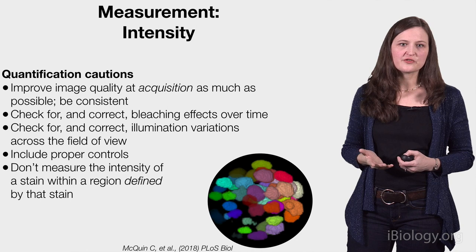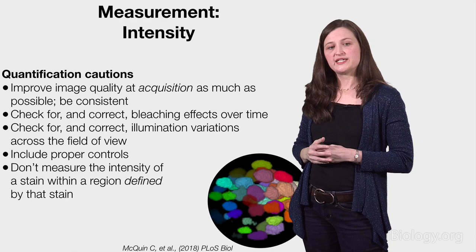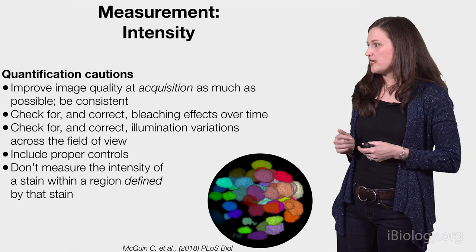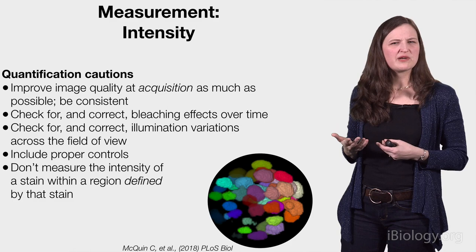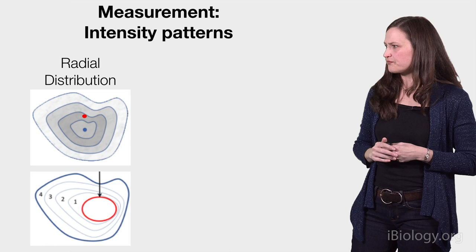And finally, a segmentation tip. Although there are exceptions, you generally don't want to measure the intensity of a stain within a region that's been defined by that stain. This can diminish true differences between samples, and it's a sort of selection bias, where you're only measuring the intensities in regions that have a certain minimum brightness. So that's something that generally needs to be avoided.